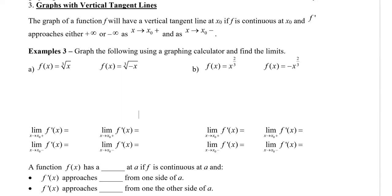In this video, I will show you how you can tell if a graph will have a vertical tangent. The graph of a function f will have a vertical tangent line at a number x₀ if f is continuous at that number x₀, and f prime approaches either positive infinity or negative infinity as x approaches that number from both the right side and the left side.